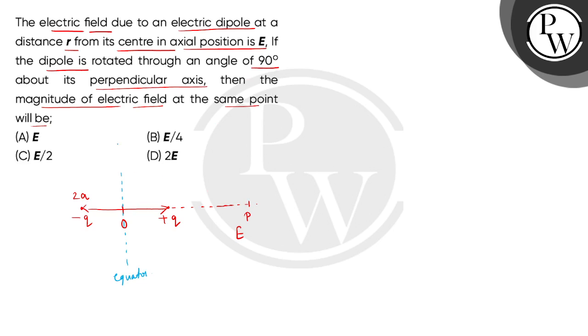where will this P point come? That will be coming on the equator. And the distance we will consider the same. So, we have to find this point P dash. Now we have to find electric field at P dash.